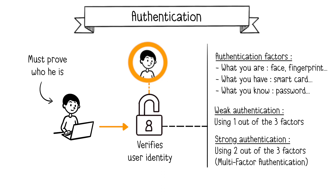There are several authentication factors. What you are — for example, iris, fingerprint, face, etc. What you possess, such as a token on a phone, or a physical or smart card. And what you know, such as a password.